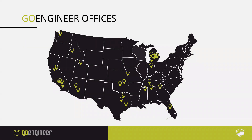A little bit about us as a company. GoEngineer has offices located throughout the United States. Our primary software is the SOLIDWORKS core CAD package, but we also carry the other SOLIDWORKS products alongside that — the data management we'll look at today, SOLIDWORKS simulation, CAM tools, plastics injection molding tools, as well as PCB and electrical tools. We also carry leading industry 3D printers and 3D scanners.